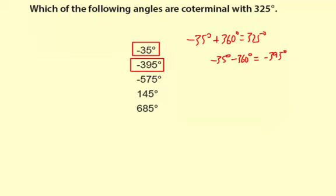Okay, now this negative 575, I know that's not coterminal because if you take negative 395 and subtract 180, you get negative 575. So that doesn't work.